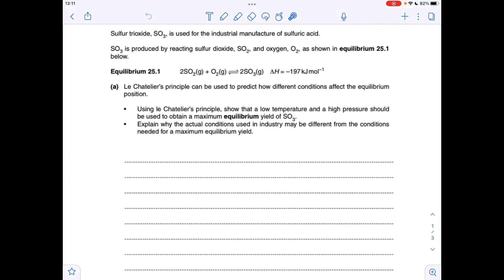So starting with temperature, why is a low temperature going to give a high yield? The forward reaction is exothermic. We can tell that from that minus delta H. So a low temperature will favour this forward exothermic reaction.